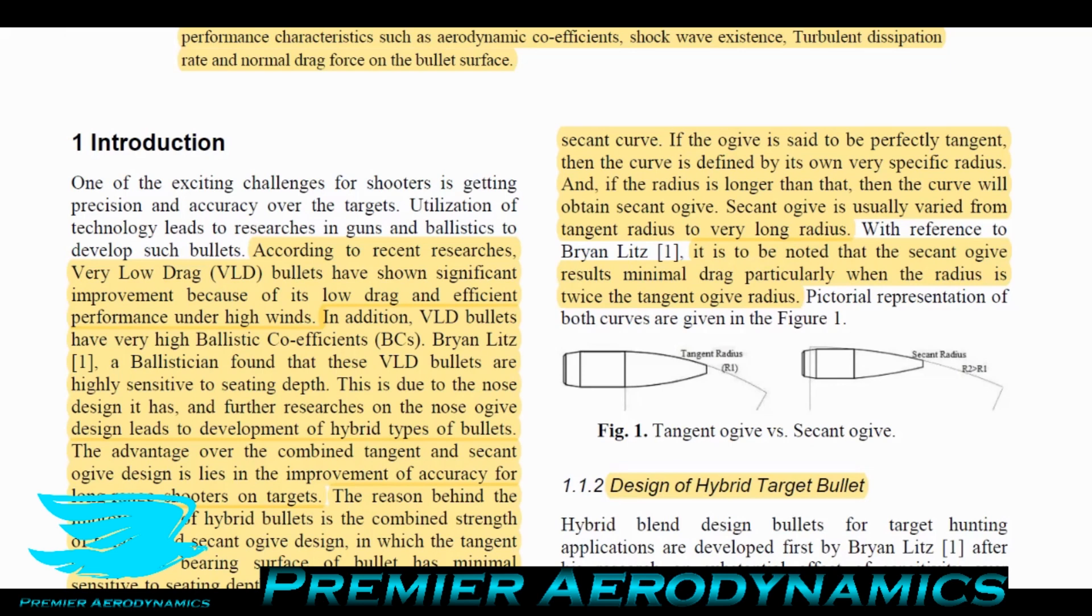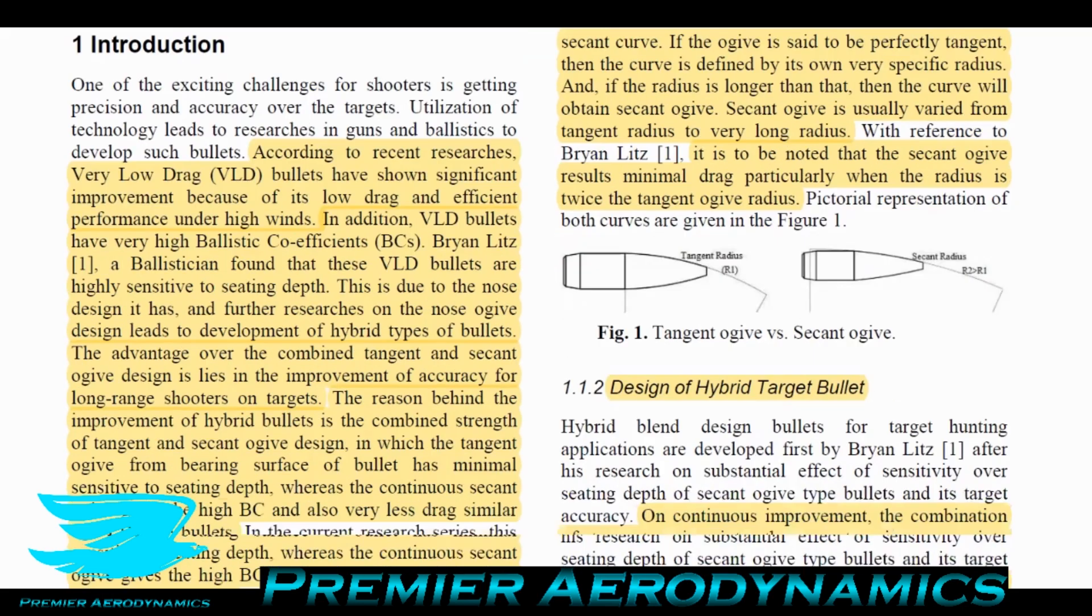It should be noted that the secant ogive results in minimal drag, particularly when the radius is twice the tangent ogive radius. This is a general parameter as a rule of thumb - the radius of curvature should be twice that of the tangent ogive to make a bullet as good as it can be.